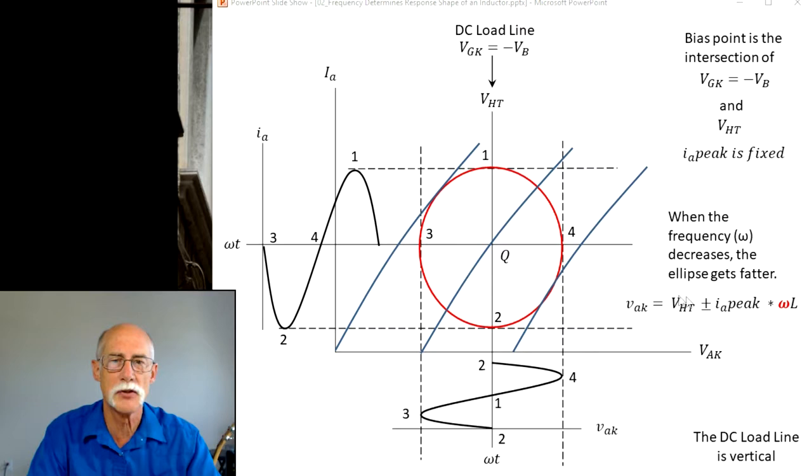The equation then for the intermediate voltage coming out is VAK equals the B+ or the high voltage plus or minus the peak current times the frequency times the inductor value in Henrys. The only variable in this equation is omega, the frequency. At a high frequency, it's going to make that ellipse larger.